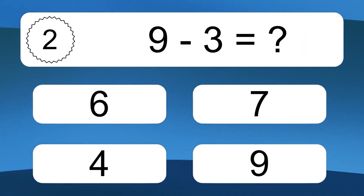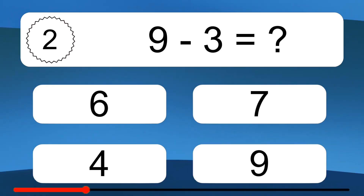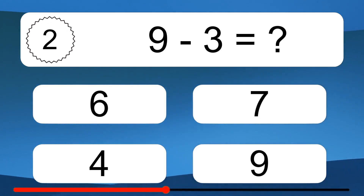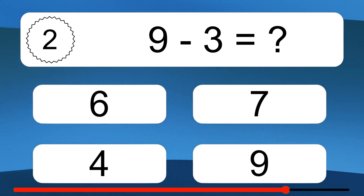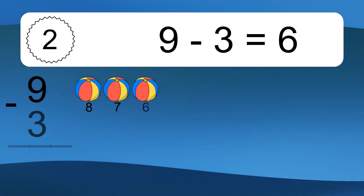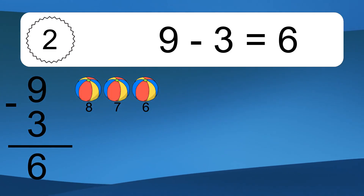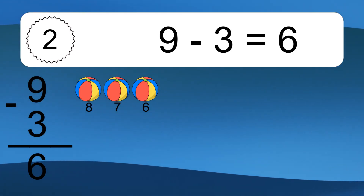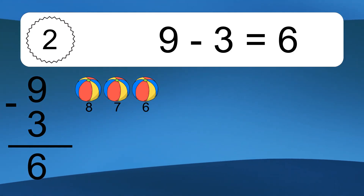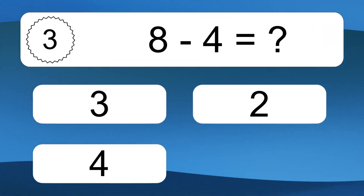9 minus 3 equals what? 9 minus 3 equals 6. Let's count it: 8, 7, 6.